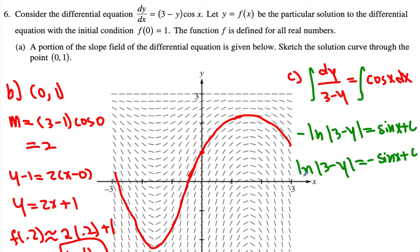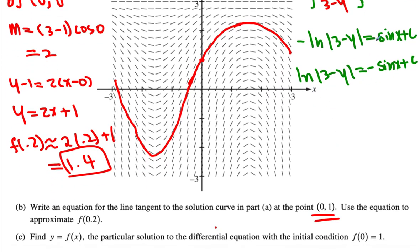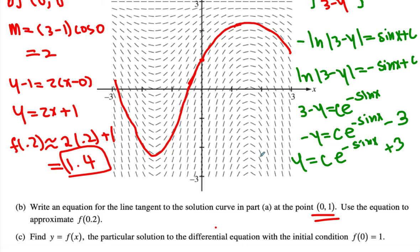What I can do is get rid of this by raising both sides to e. So we get 3 minus y equals e to the (negative sine of x) and then plus c actually goes into the coefficient in front. Then I can subtract 3, so we get negative y equals c times e to the (negative sine of x) minus 3. We get y equals c times e to the (negative sine of x) plus 3.